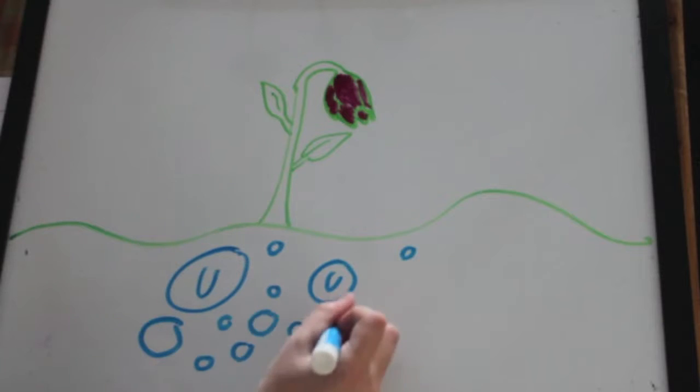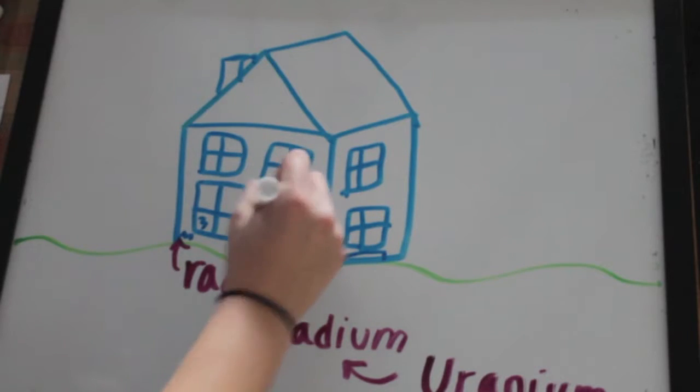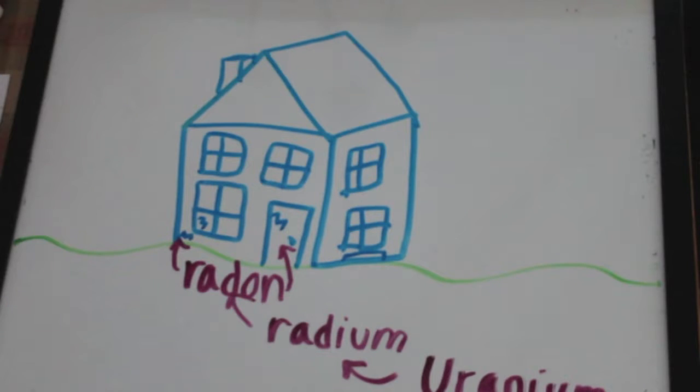It comes from a natural decay of uranium that is found in nearly all soils. It moves up through the ground to the air above and into your home through cracks and holes in the foundation.